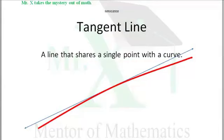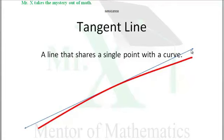A tangent line is a line that shares only a single point with a curve. We have a curve here, part of a graph of a function perhaps, and we could find a point and draw a line through that point. The line we would call a tangent line. It only touches the curve at a single point.